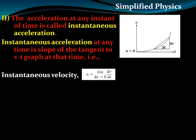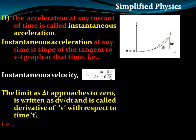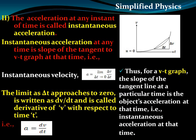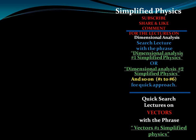Instantaneous acceleration is the acceleration at any particular instant of time. Instantaneous acceleration a equals the limit as delta t approaches zero of delta v by delta t, which gives a equals dv/dt. This term is called the derivative of v with respect to t, and this is the instantaneous acceleration.